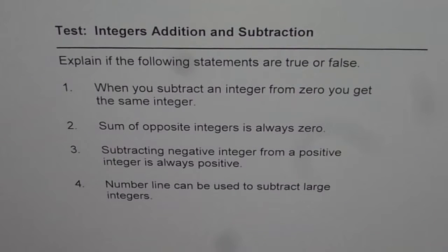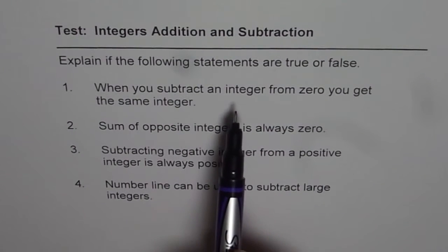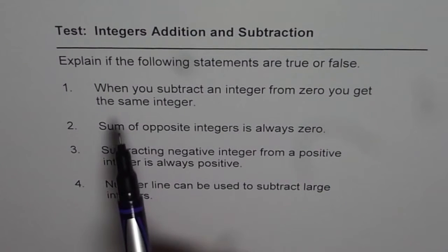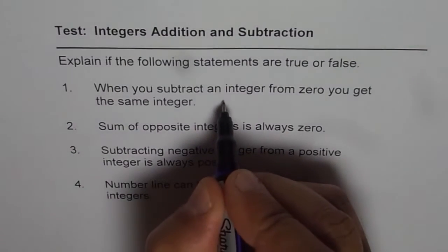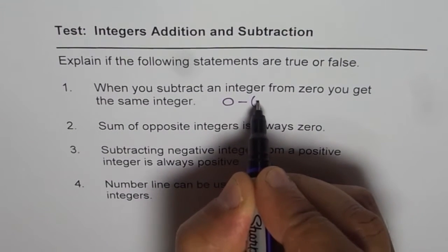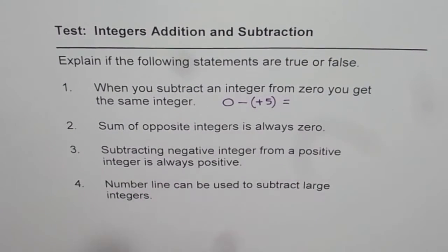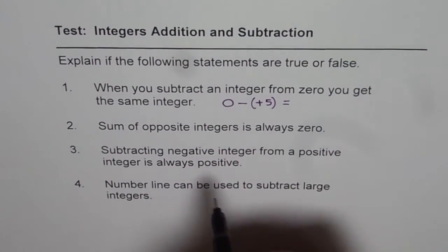Let's start answering them one by one. Here is how I will answer the first one. When you subtract an integer from 0, you get the same integer. Let's take an example. So we have to subtract some integer from 0. Integers could be positive or negative. Let's do this operation of subtraction. 0 minus, let us take a positive integer, let's say 5. What do we get? 0 minus plus 5 will give us negative 5.